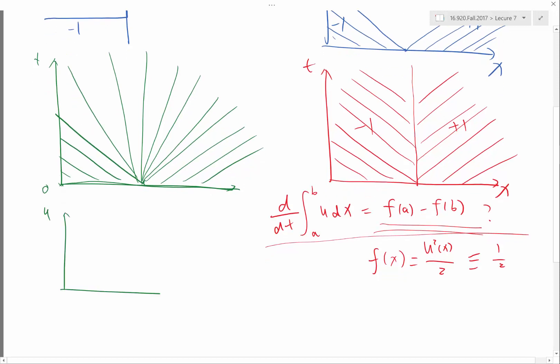So if you look at the solution u as a function of x, initially it's this. I should draw the y-axis over here. Initially it's this, and after a little bit it becomes like this. And after a little bit further it becomes like this, and then becomes like that.